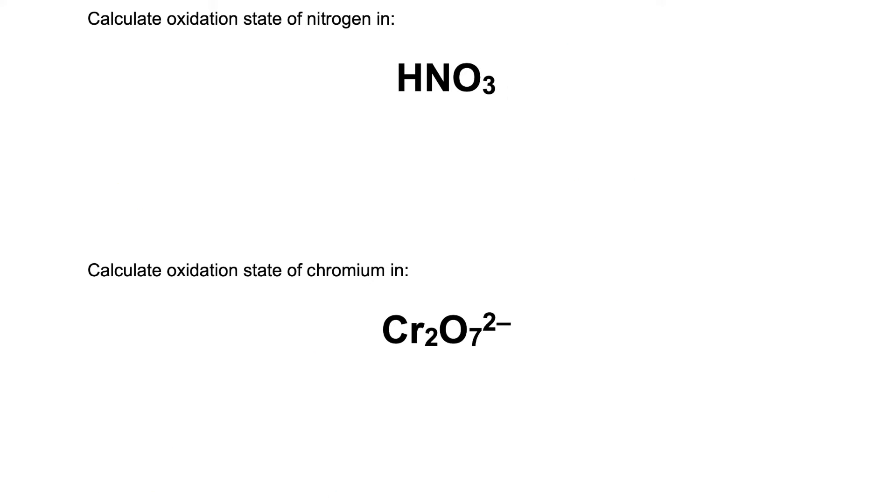Two more examples. Calculate the oxidation state of nitrogen in nitric acid. The oxidation state of hydrogen is always plus one. And for oxygen is minus two. This one we do not know. We let that be x. We construct our equation plus one plus x plus three times minus two equals to zero.